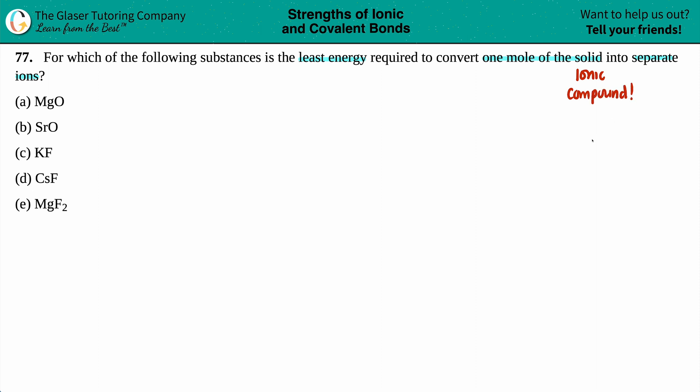We want to separate them into ions. Whenever you're trying to pull apart an ionic compound and turn it into its ions, that's the lattice energy. Lattice energy is when you have an ionic compound that's a solid and you basically break that ionic bond.